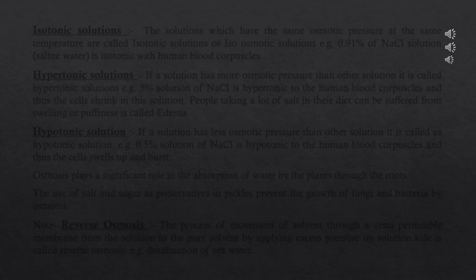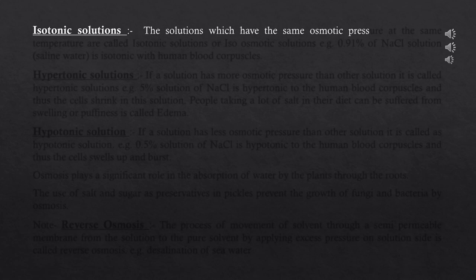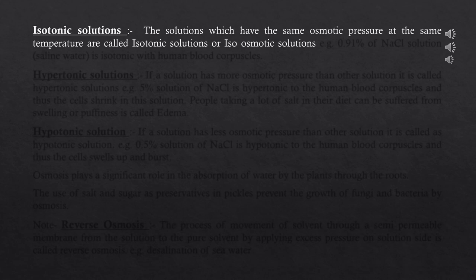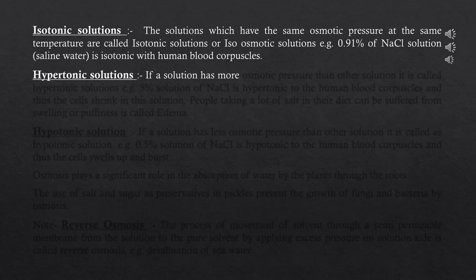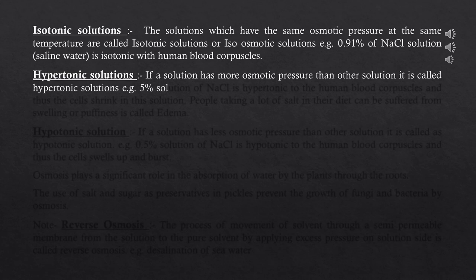Let's discuss some terms related to osmotic pressure. First, isotonic solutions: solutions which have the same osmotic pressure at the same temperature are called isotonic or iso-osmotic solutions. For example, 0.91% sodium chloride solution (saline water) is isotonic with human blood corpuscles (red blood cells). Second, hypertonic solutions: if a solution has greater osmotic pressure than another, it is called hypertonic. For example, 5% NaCl is hypertonic to human blood corpuscles, causing cells to shrink.